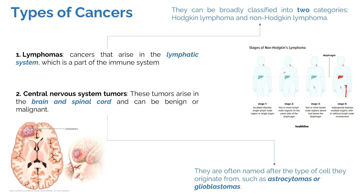CNS tumors can be benign or malignant and are often named after the cell type they originate from — for example, astrocytomas arise in astrocyte cells and glioblastomas in glial cells. Lymphomas can be broadly classified into two categories: Hodgkin lymphoma and non-Hodgkin lymphoma. They occur in immune system regions and become lymphoid cancers, progressing through stages.